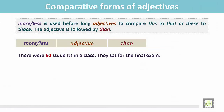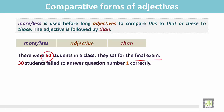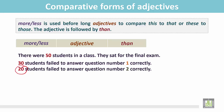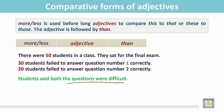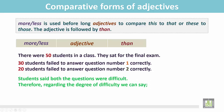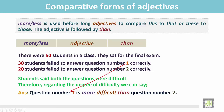See the examples — the situation in a classroom. There were 50 students in a class. They sat for their final examination. In this situation, 30 students failed to answer question number 1, and 20 students failed to answer question number 2. Both questions were difficult. Therefore, regarding the degree of difficulty, we can say that question number 1 is more difficult than question number 2, because 30 students failed to answer it.